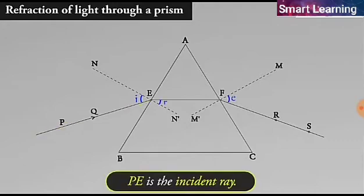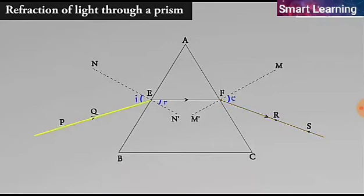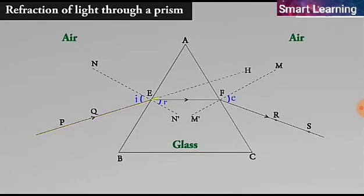Here PE is the incident ray, EF is the refracted ray, and FS is the emergent ray. You may note that a ray of light is entering from air to glass at the first surface AB. The light ray on refraction has bent towards the normal. At the second surface AC, the light ray has entered from glass to air. Hence, it has bent away from normal.